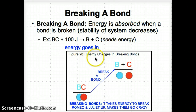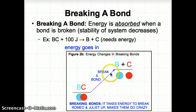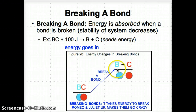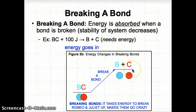We can think of this using Figure 2b, which shows energy changes in breaking bonds. Molecule BC represents Romeo and Juliet as a stable couple. It takes energy to break Romeo and Juliet up, and when they're separated into atoms B and C, they go crazy and become hyper — they're considered less stable when split up and more stable when they're together.